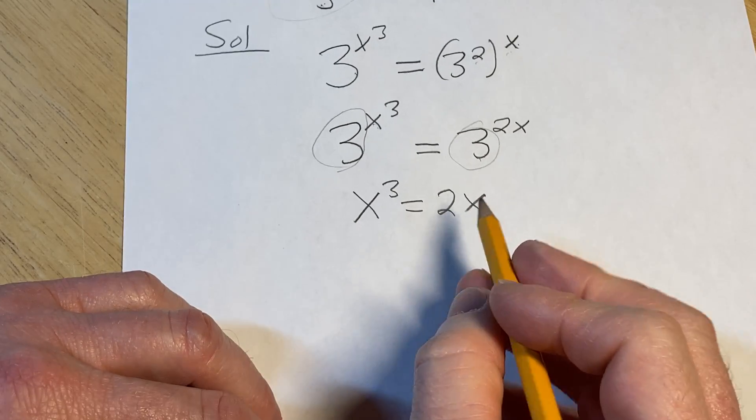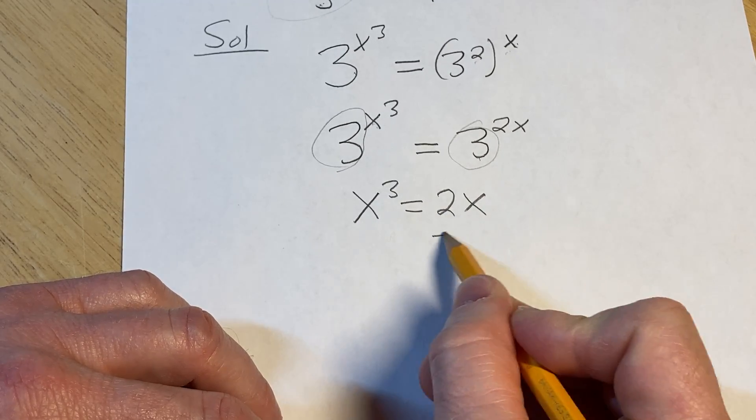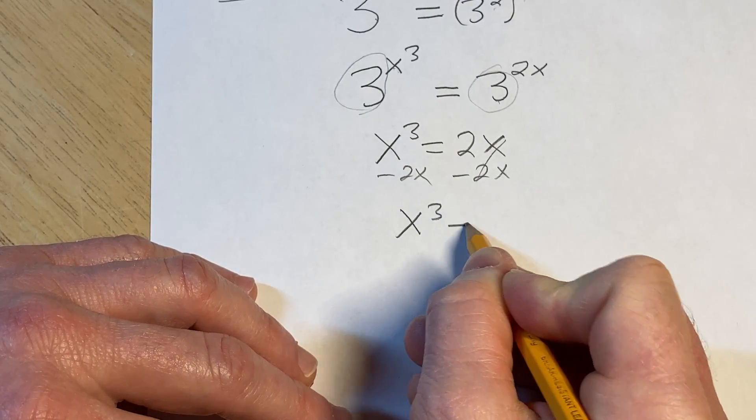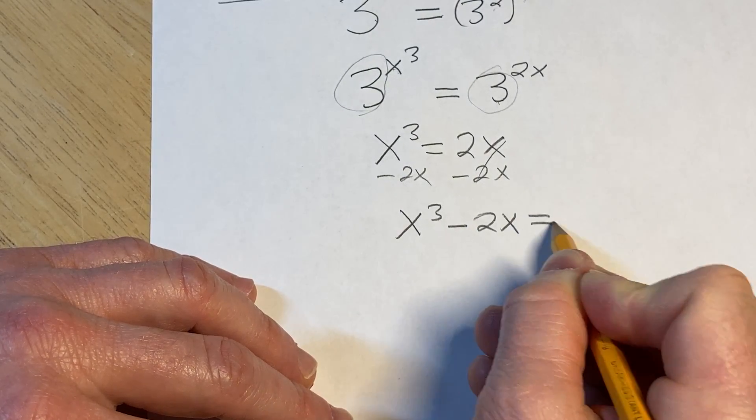And so to solve this, what we'll do now is we'll set it equal to 0. So we'll subtract 2x from both sides. So we have x cubed minus 2x equals 0.